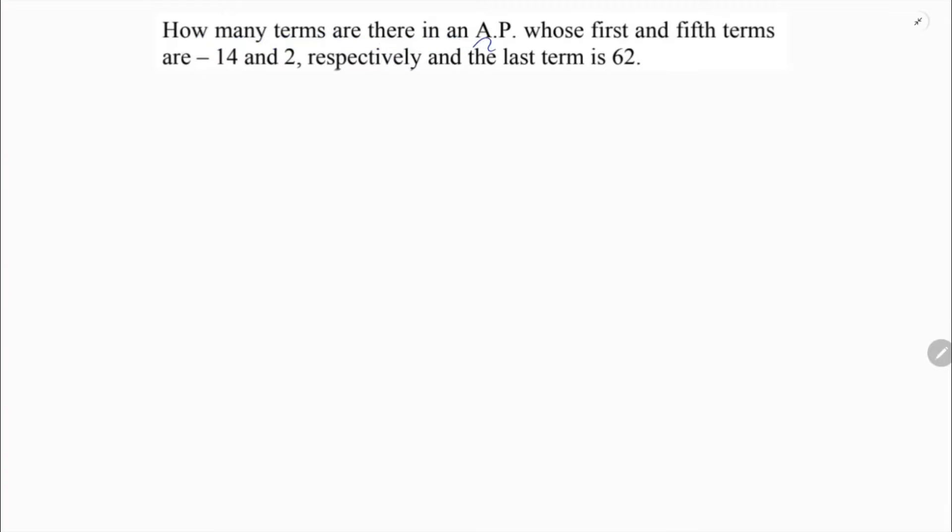How many terms are there in an AP whose first and fifth terms are minus 14 and 2 respectively and the last term is 62. First term is given, so here clearly A is given. A is minus 14.